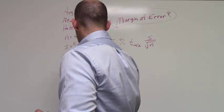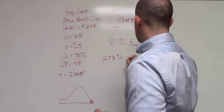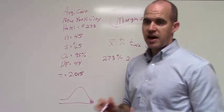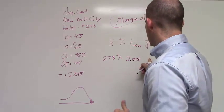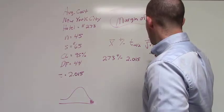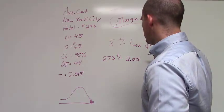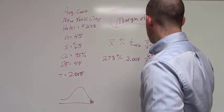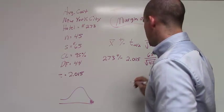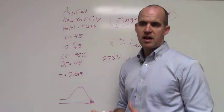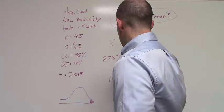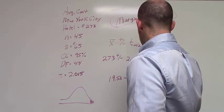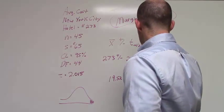So, we're taking this 2.015, and we're multiplying that value by our particular standard error, which is going to be our sample standard deviation, $65, divided by the square root of 45. Now, if you do the math on that, you'll get 19.52, or we might just round that up to approximately $20.